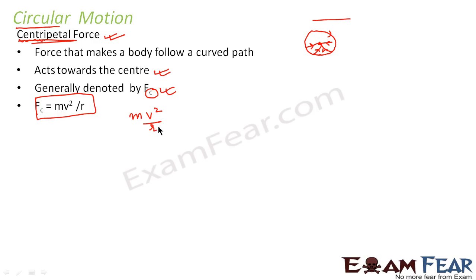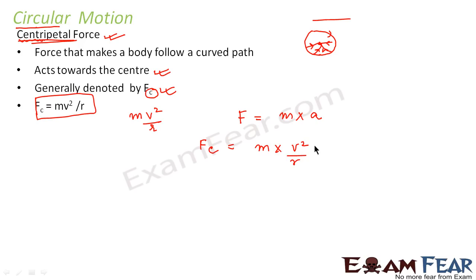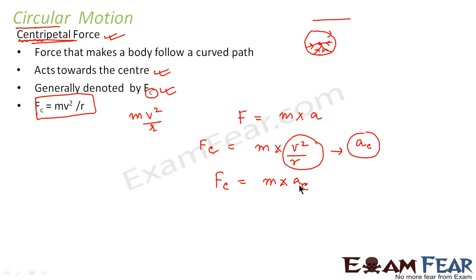The centripetal force is equal to mv²/r. We already know that force in general is equal to mass into acceleration. So if we compare the formula for centripetal force with this formula, we find that v²/r is the acceleration here. This v²/r is known as centripetal acceleration. So we can write centripetal force is equal to mass into centripetal acceleration, which is v²/r.